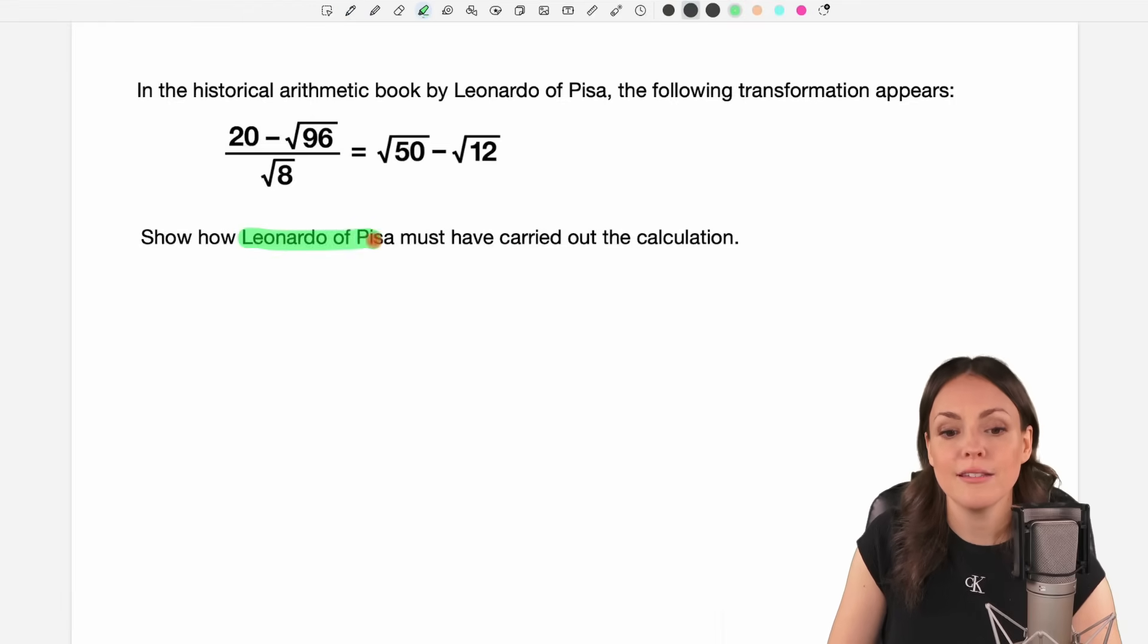Leonardo of Pisa, by the way, is also called Fibonacci, the famous mathematician, and we have to show how to get from this expression here to this expression.